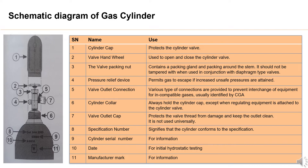Schematic Diagram of Gas Cylinder. The main parts of the gas cylinder are: 1. Cylinder Cap — protects the cylinder valve. 2. Valve Hand Wheel — used to open and close the cylinder valve. 3. The Valve Packing Nut — contains a packing gland and packing around the stem; it should not be tampered with when used in conjunction with diaphragm-type valves. 4. Pressure Relief Device — permits gas to escape if increased unsafe pressures are attained.